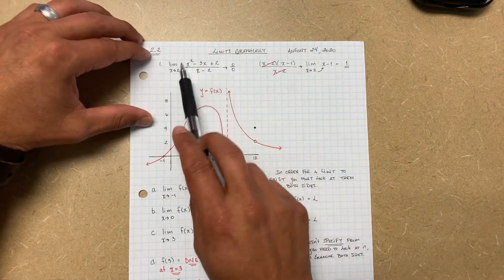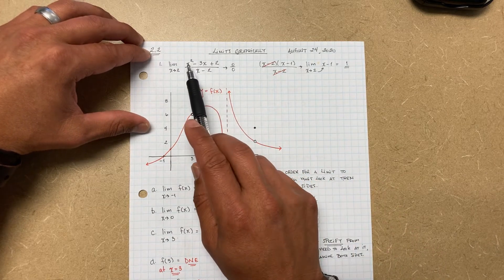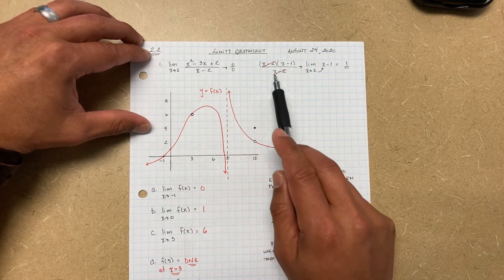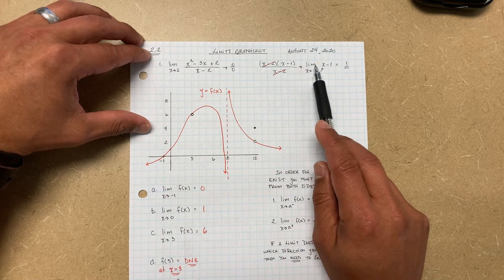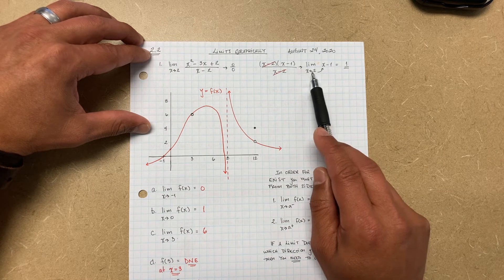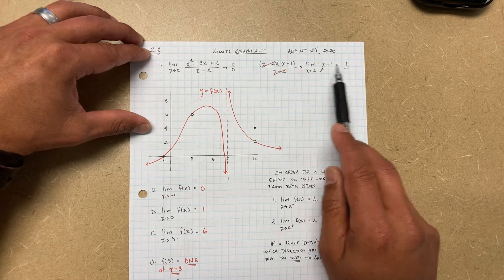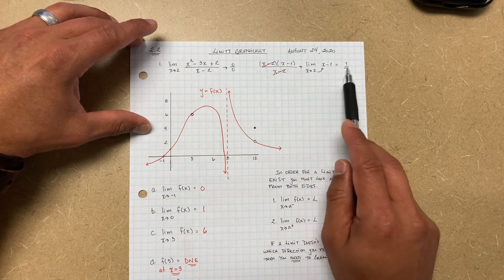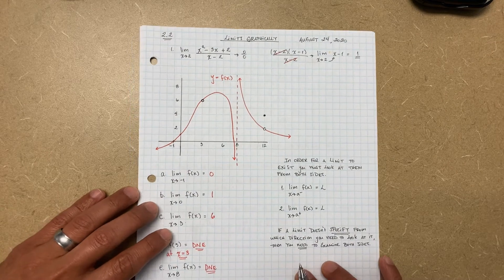One of the ways you modify it is by factoring. You notice here this expression got factored, we can then simplify it out, and we're left with a new limit: the limit as X approaches 2 of X minus 1. Now we can go ahead and plug it in, and 2 minus 1 is 1, so this gives you a limit of 1.